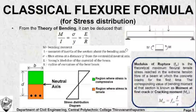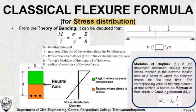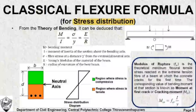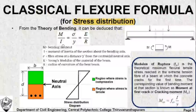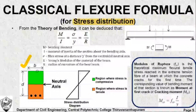Coming to the classic flexure formula, we invoke this formula to understand the stress distribution in a reinforced concrete structure. According to the theory of bending: M/I = σ/Y = E/R. When the beam is subjected to loads it develops a bending moment at every section. M is the bending moment, I is the moment of inertia of the section, and σ is the bending stress at any particular fiber in that cross section. That fiber may be located at a distance Y away from the neutral axis.